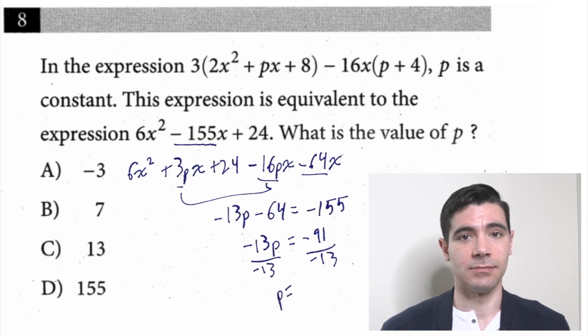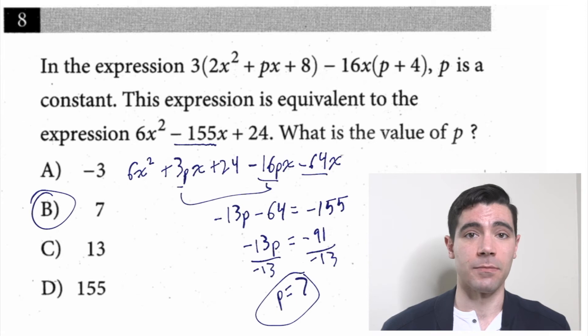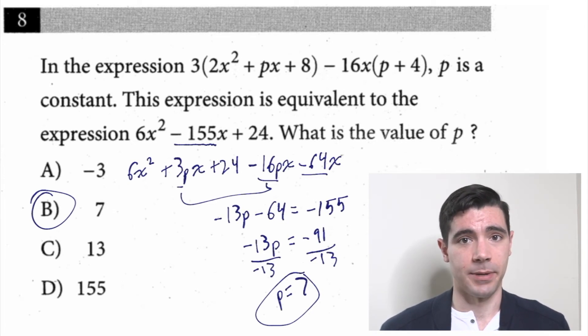A problem like that can seem kind of intimidating at the top, since there are a dozen different terms at the beginning. But when they told us that expression was equivalent to this 6x² - 155x + 24, we knew we just needed to get our p equation to look similar to the equation they gave us, and then we'd be able to find which were the corresponding coefficients and solve for p.